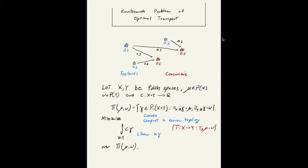Moreover, the objective function in Monge's problem is given by integrating over X, the function C of X, T of X against μ, which is, of course, nonlinear in T.